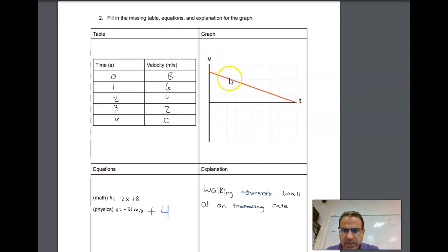As you can see, the velocity is going down, down, down. This person chose a starting velocity of 8, which would be the y-intercept at time equals 0. It looks like every second the velocity is decreasing by 2 meters per second, indicating that you are slowing down.